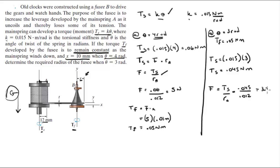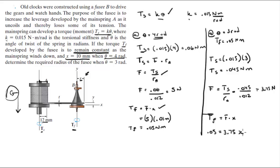Now that we have the force and know Tf remains constant, we use Tf = F·x: 0.05 = 3.75 × x. Solving for x gives x = 0.01333 meters, or converted to millimeters, 13.33 millimeters. That is the new required radius of assembly B.